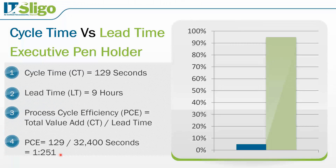If you can get the ratio down to even 25 to 1, that would be considered world class. Basically, we're looking at the portion of time spent in the process that a product or service is actually being worked on — this is the concept of value add.